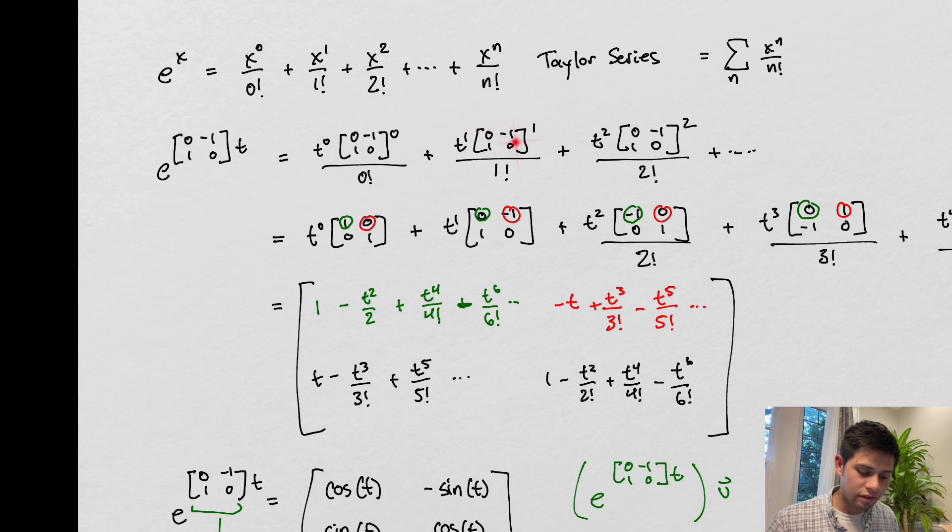And so we would get something that looks like this. We're just exponentiating t and the matrix, and then we could say, okay, well this matrix to the zero power, that's just the identity matrix, just like anything to the zero power is one. That turns out to be right here.